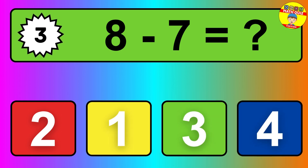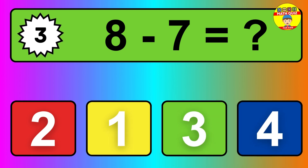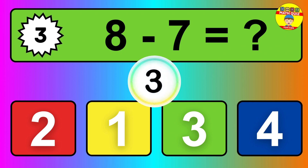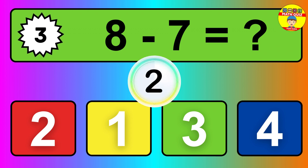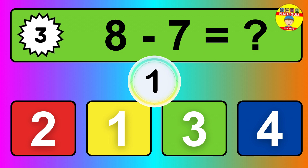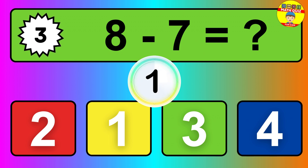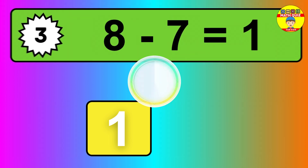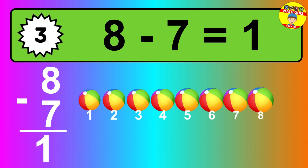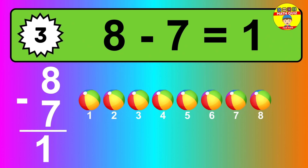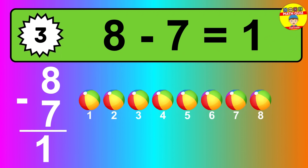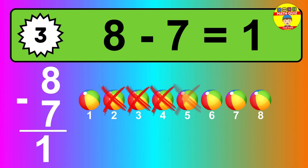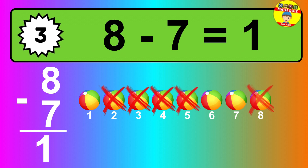Question 3. 8 minus 7 equals what? So the answer is 8 minus 7 is 1. Let's count it. 1.